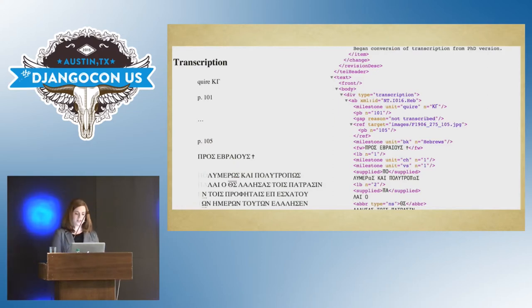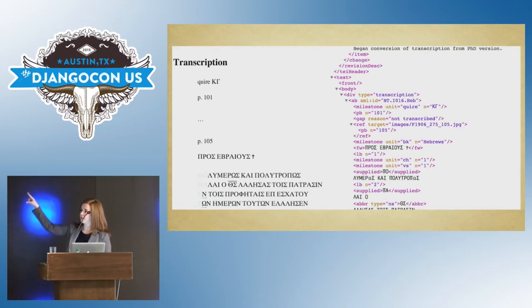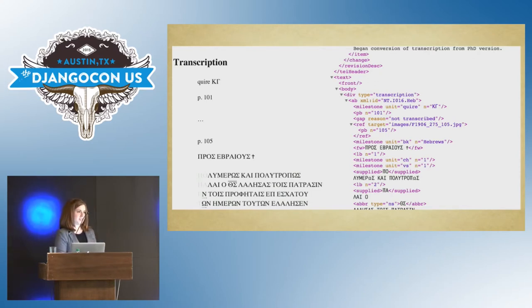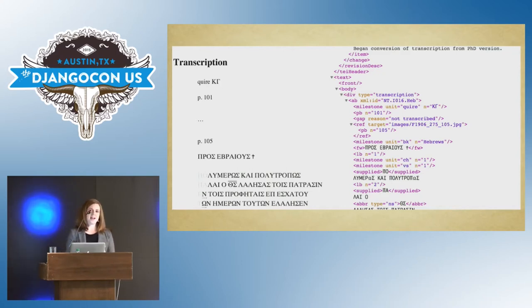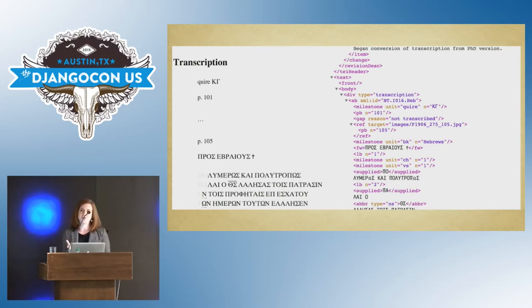In 2009, I took a workshop on TEI — the Text Encoding Initiative. TEI is an XML markup language specific to manuscripts. On the left you have what is being transcribed, and on the right you have the TEI XML markup. It has really awesome and specific tags for manuscripts — tags for the publisher, the date, the author, the title. And there's a way to represent in markup that Mark Twain scratched through a line and then wrote something else above it, which is really neat.